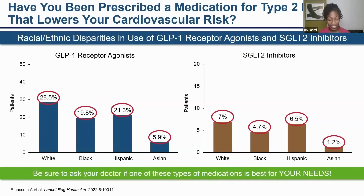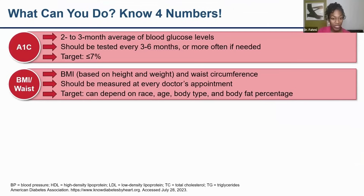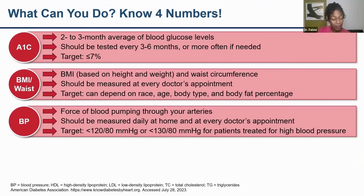It's not the elevated blood sugar that gets you — it's the complications. Layering in an SGLT2 inhibitor or a GLP-1 receptor agonist really lowers that risk. You should ask your doctor specifically: am I on a GLP-1 receptor agonist? Am I on an SGLT2 inhibitor? You have to be your own best advocate. Know your hemoglobin A1C — it should be checked every two to three months, with a target of less than 7 or less than 6.5. Know your BMI, waist circumference, and weight. Check your blood pressure at home and bring those logs to your doctor.